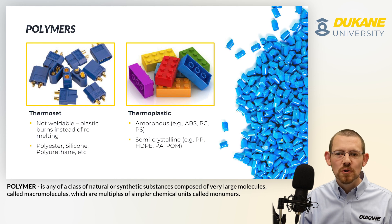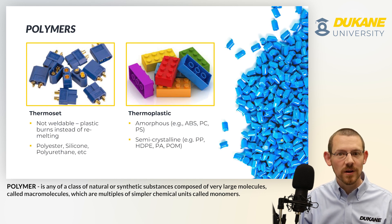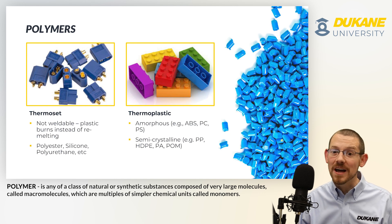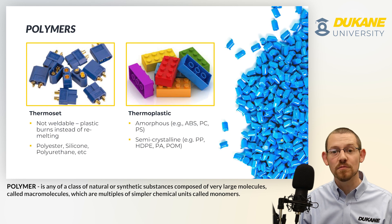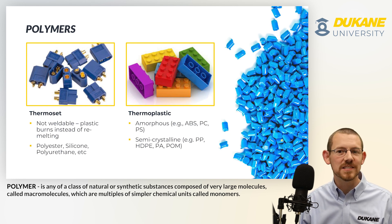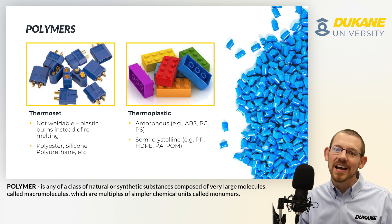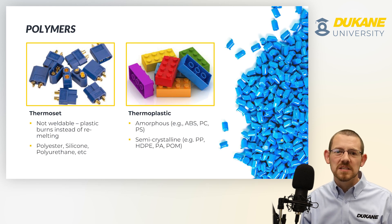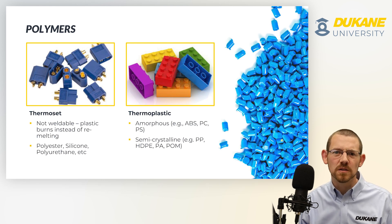Polymers come in two generic styles: thermoset resins and thermoplastic resins. Thermoset resins are not weldable. If you try to reprocess a thermoset plastic part or component, it simply burns. It does not melt and reform. As a result, we cannot bond those parts together. These are things like silicone, polyester, and certain polyurethane resins.